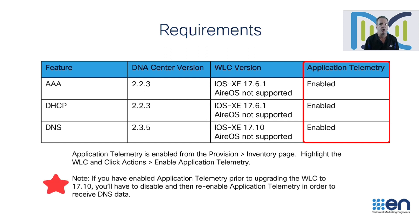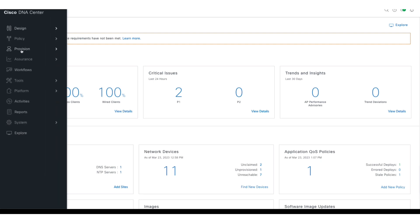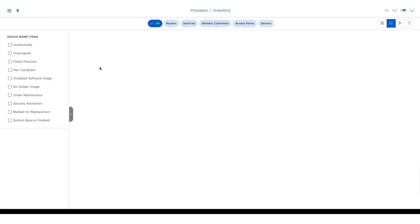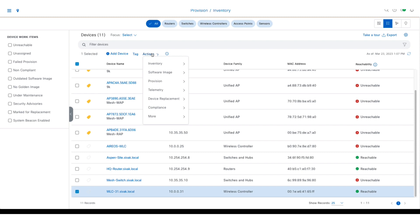Now, if you've enabled application telemetry prior to 17.10, you do have to disable and re-enable application telemetry to get the DNS data. If you simply try to update the telemetry settings, it won't actually create the NetFlow DNS monitor. So just keep in mind that you'll have to disable and re-enable application telemetry if you aren't seeing any DNS data. You can do this by selecting the wireless LAN controller from Provision, Inventory, and then Telemetry — Disable Application Telemetry, followed by Telemetry — Enable Application Telemetry.